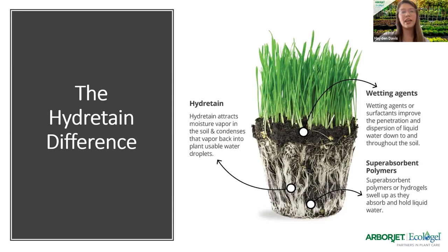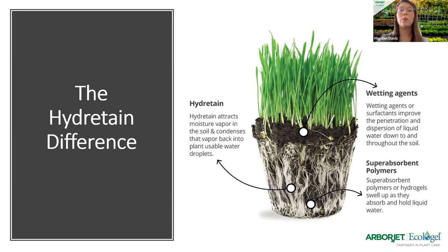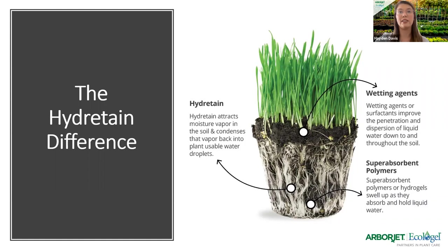This slide breaks down how Hydrotain is different from wetting agents and super absorbent polymers. It's common to confuse the humectant technology with these, but they're totally different products. Wetting agents improve penetration — they help water get down into the soil better, especially in compact ground. Super absorbent polymers act like a sponge — they absorb all the water and then release it. But Hydrotain actually creates water and makes it available to your plants. Neither wetting agents nor super absorbent polymers will condense humidity back into usable water droplets readily available for the plant.